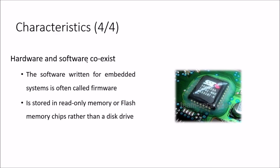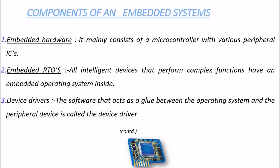Then comes the fourth characteristic: hardware and software co-exist. The software written for an embedded system is often called firmware. This is very important — the software written for an embedded system is often called firmware, and it is stored in ROM or flash memory chips rather than a disk drive.